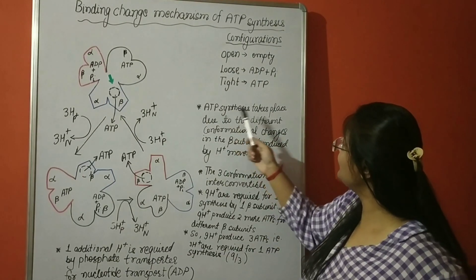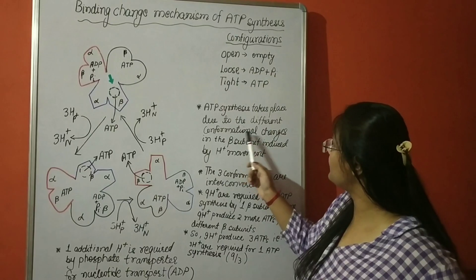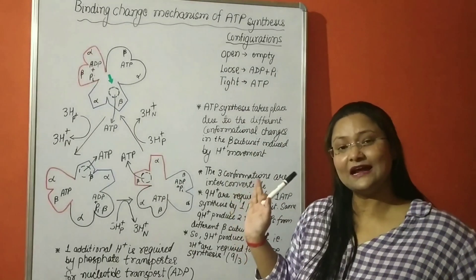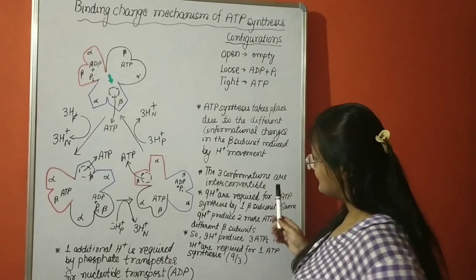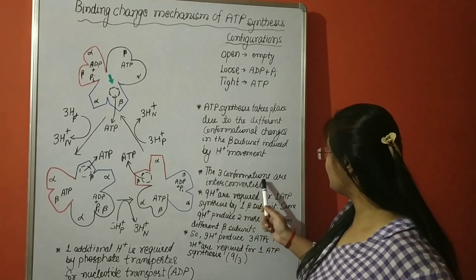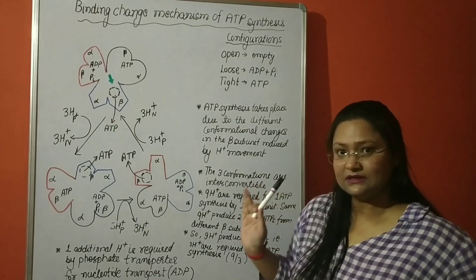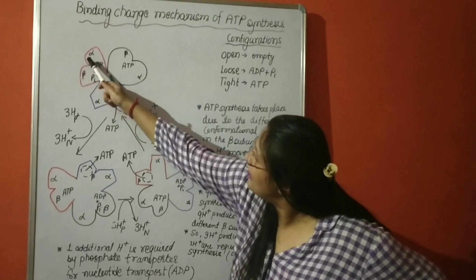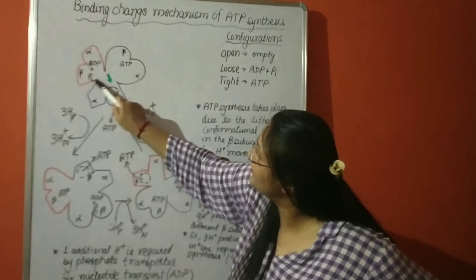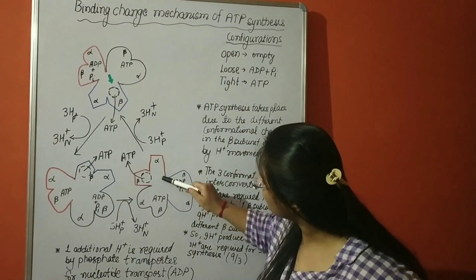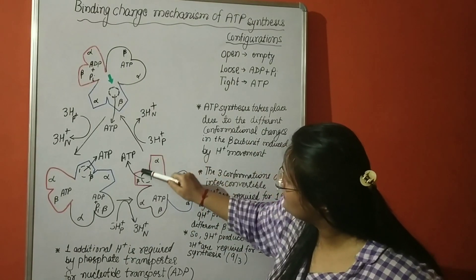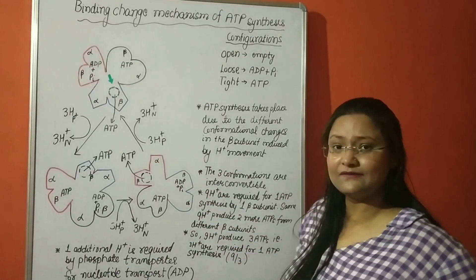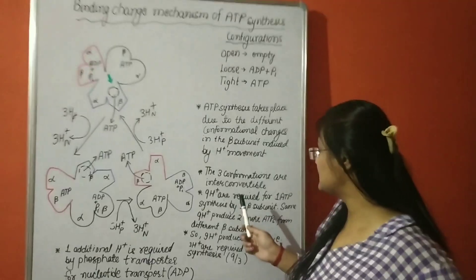ATP synthesis takes place due to the different conformational changes in the beta subunit induced by H+ movement. The three conformations are interconvertible. Like they can be changed into one into another. Here red one is in this leaf-like form but here it has changed the form. So these are basically interconvertible, the conformations.